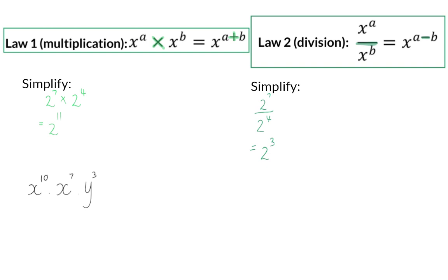These laws can also be applied to variables, and here we can use the first law for the bases that are the same, so for the x's. That means we will add the exponents of 10 and 7 to get to x to the power of 17, which should be multiplied by y to the power of 3. Because these are two different bases, this is our final answer.